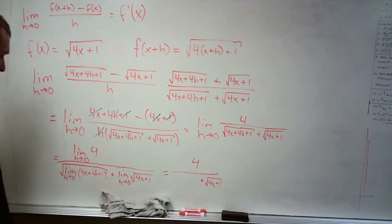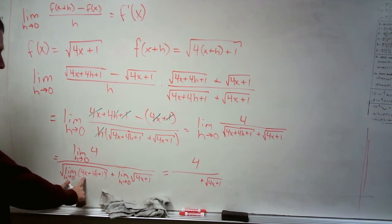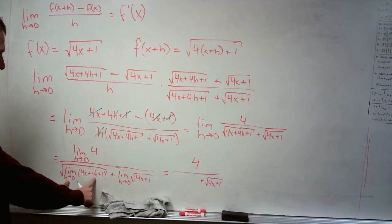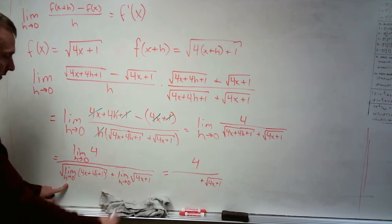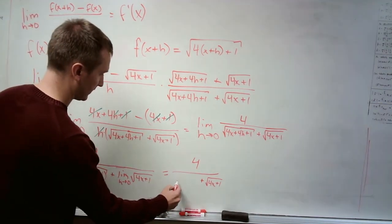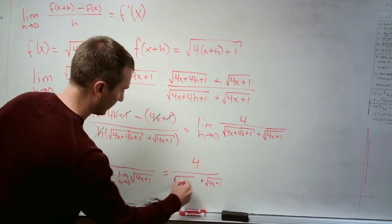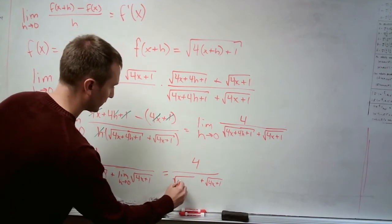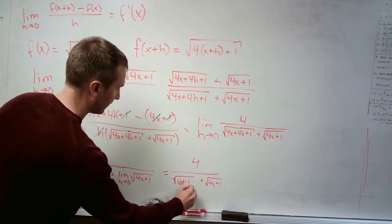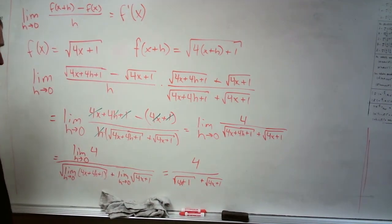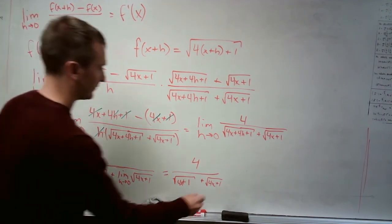And this one, well, the limit of 4x, that stays 4x. There's no h there. The limit of 4h goes to 0 because h goes to 0. The limit of 1 stays 1 because it's a constant. So this is the root of 4x plus 1 as well, which gives us our result. Two of the same thing added together.